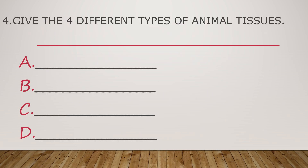Number four. Give the four different types of animal tissues.